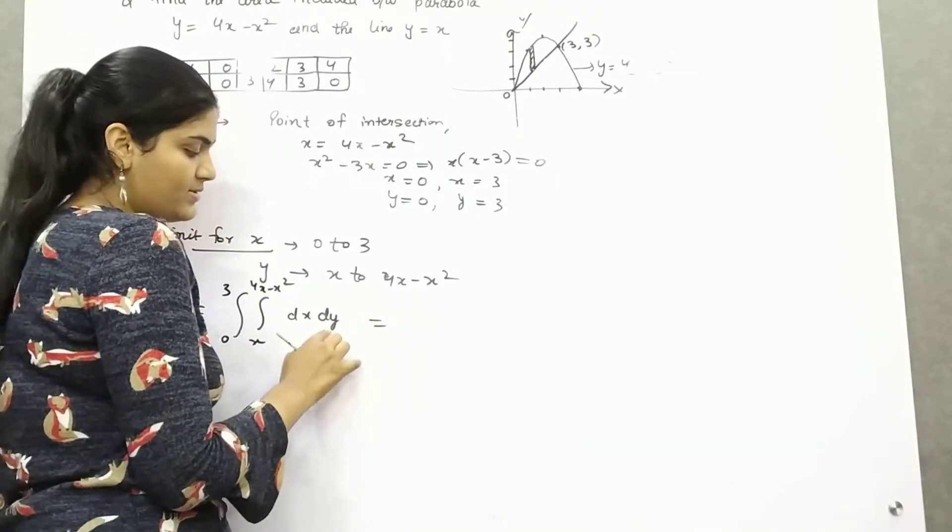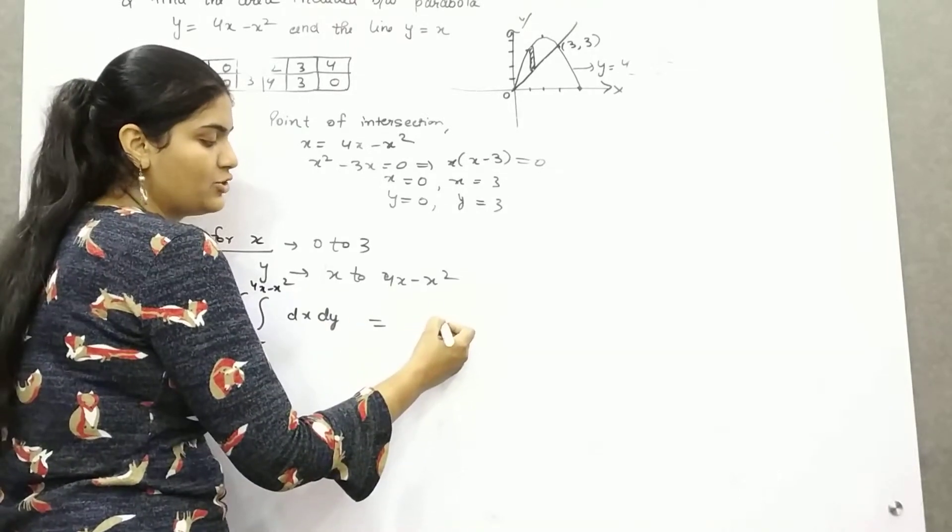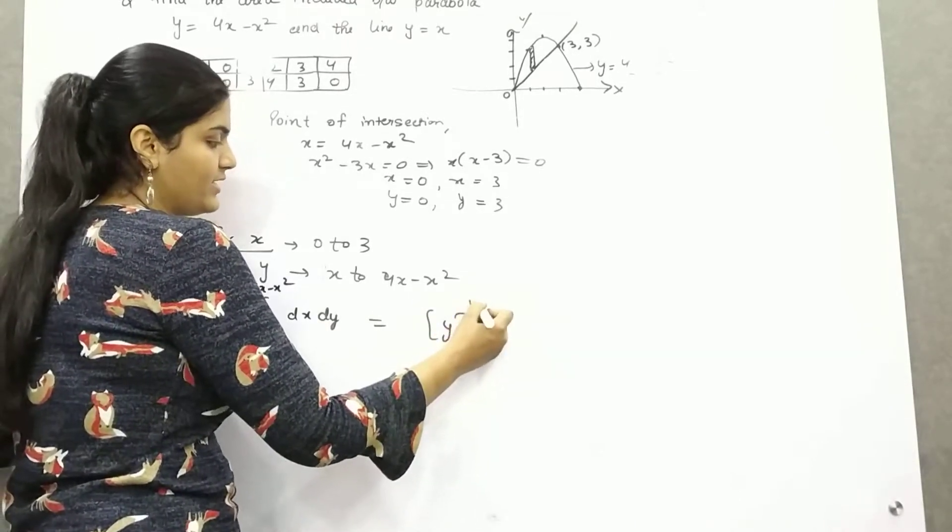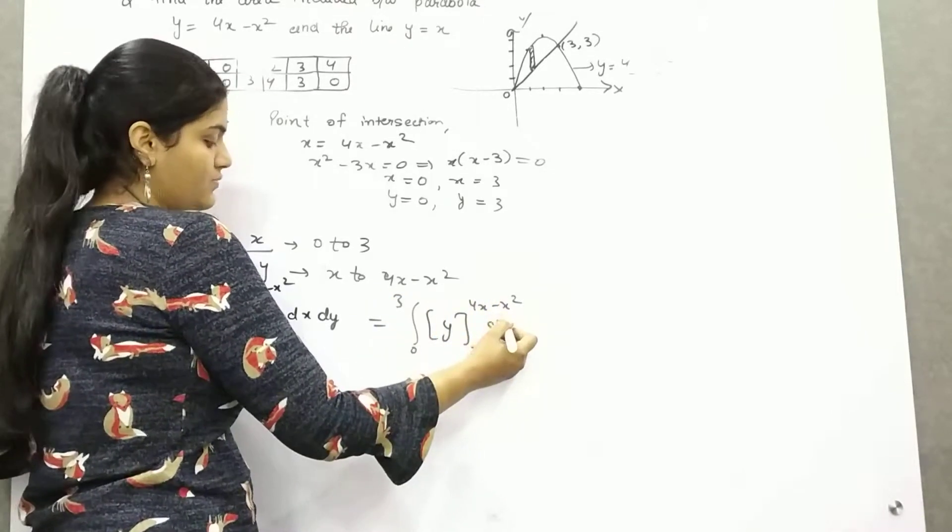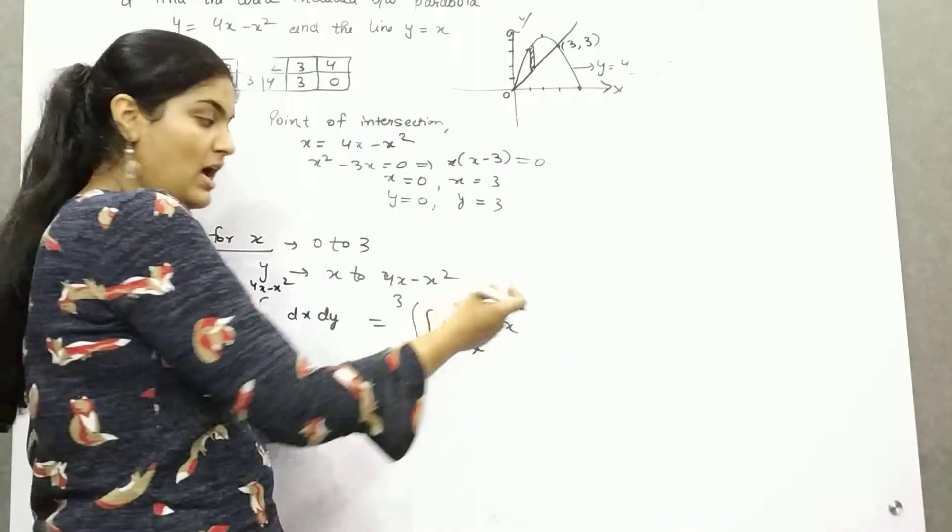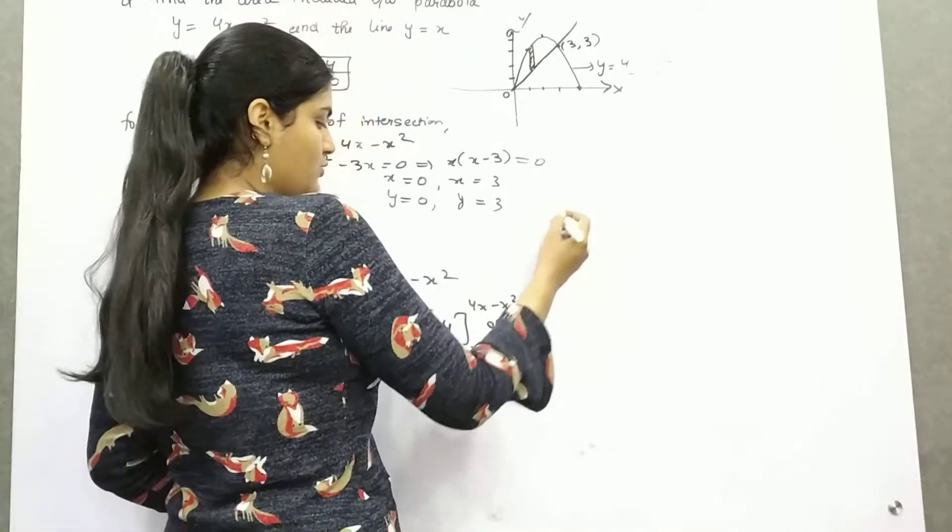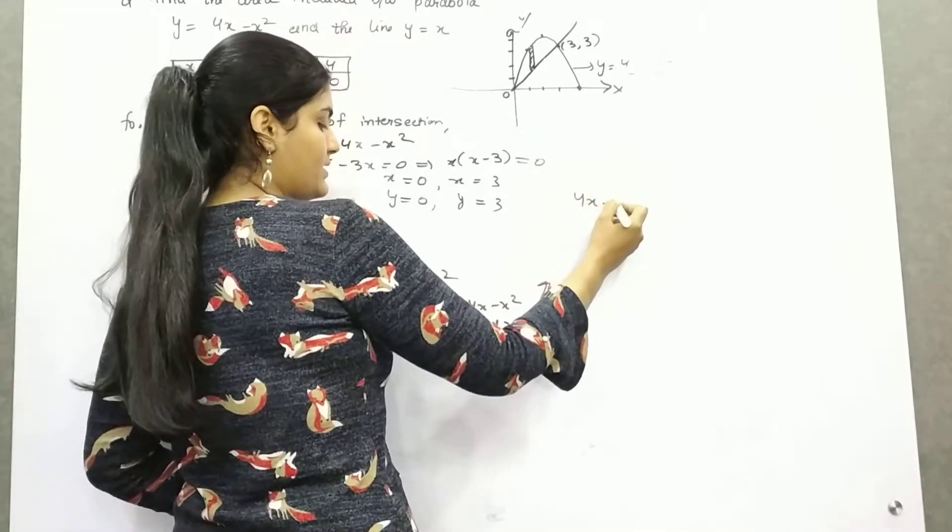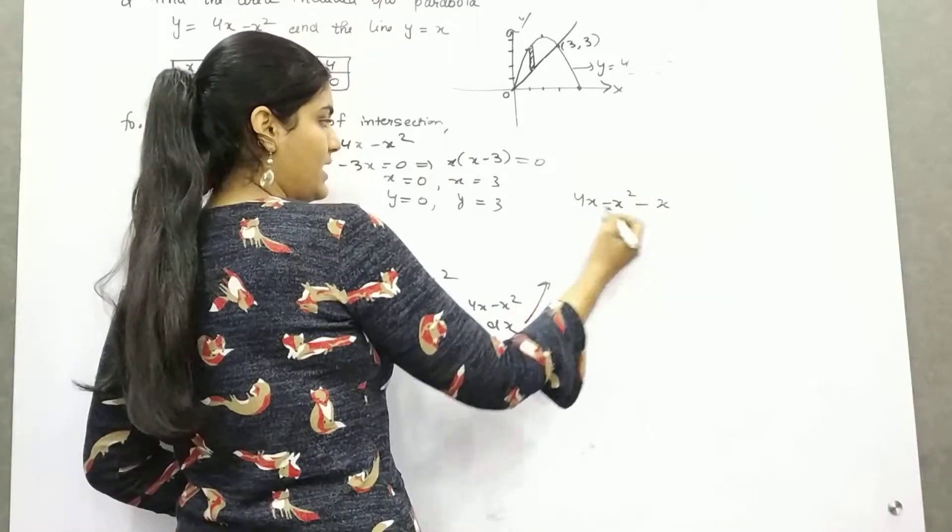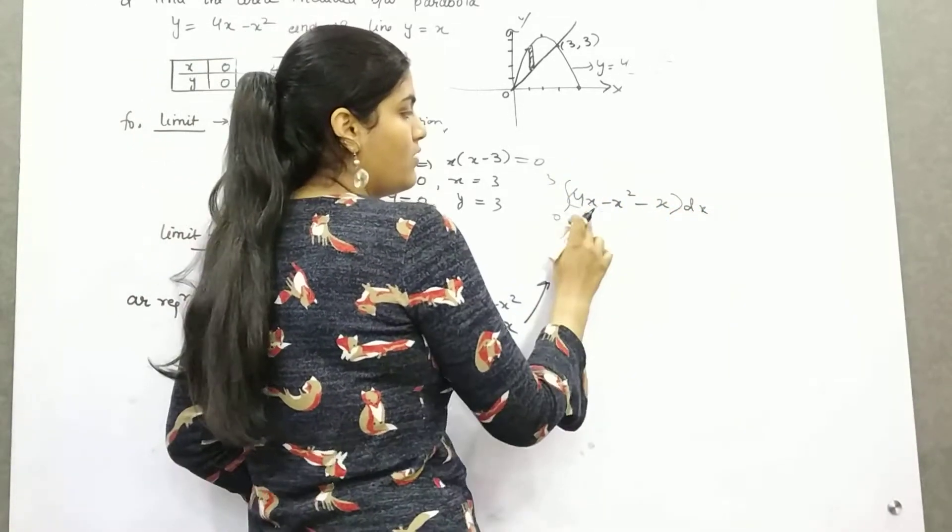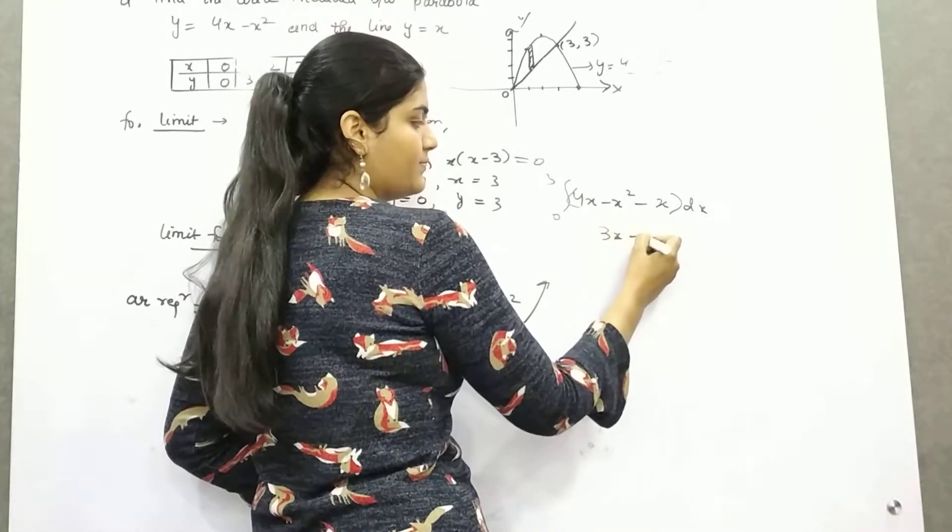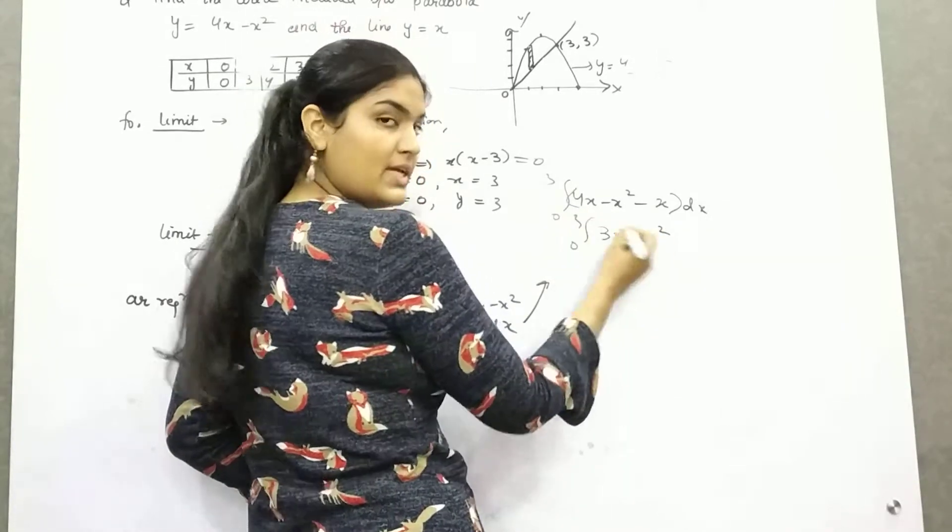Solve dy first. So value of integration of dy is y, limit from x to 4x minus x squared, changing from 0 to 3. Upper limit minus lower limit. So 4x minus x squared minus lower limit is x, limit 0 to 3 dx. 4x minus x is 3x minus x squared, limit 0 to 3.